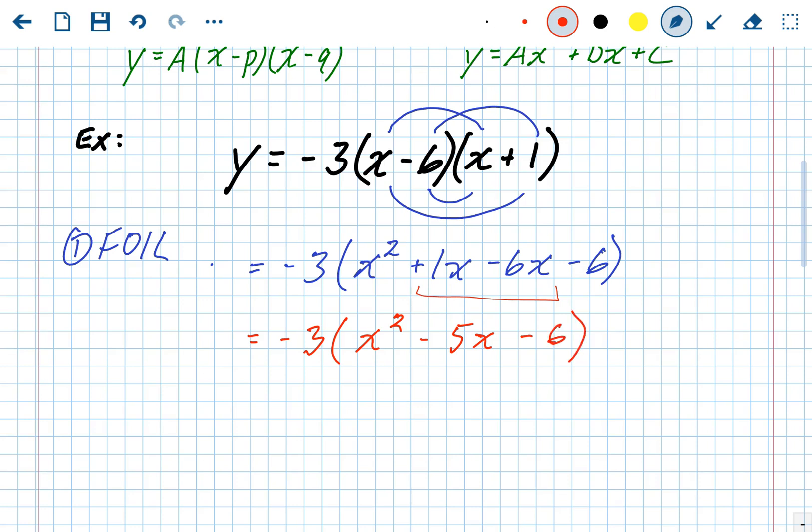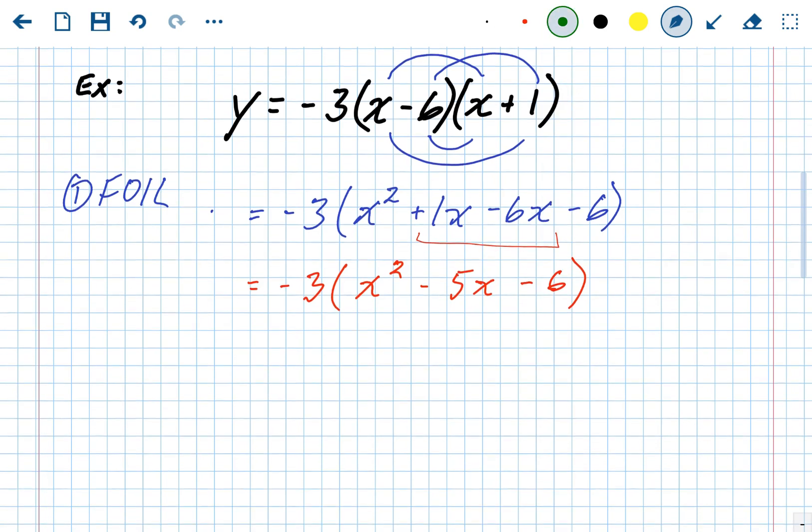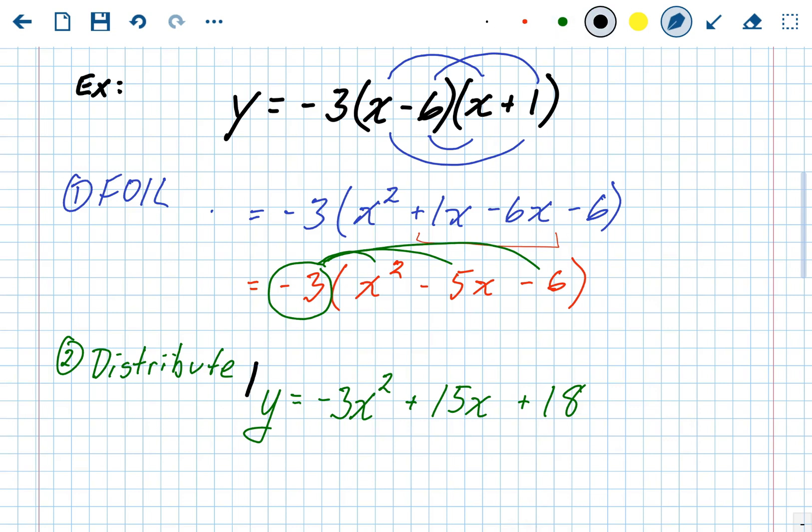And then your instinct on this next part is probably correct. You're going to want to distribute that number in front. So that A value, that number in front, if there is one, you're going to have to distribute through the trinomial. So we distribute the negative 3. Negative 3 times X squared is negative 3X squared. Negative 3 times negative 5X is positive 15X. And then negative 3 times negative 6 is plus 18. And that is standard form.